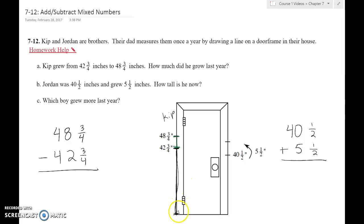So let's take all 48 and 3/4ths inches. Let's take that whole distance, and let's subtract what he already was. So that's what we're doing here. We're subtracting what he already was, and we're going to find how much he grew.